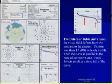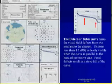Focal defects involve a steep fall of the curve as we see in the arrow to the right-hand side.